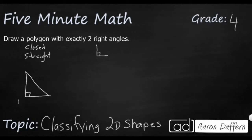Obviously when we're thinking of right angles, we're thinking of squares or rectangles, but that's going to be a problem because squares or rectangles are both going to have four right angles. So how could we draw a polygon that has exactly two right angles?